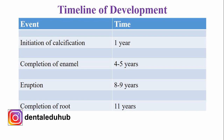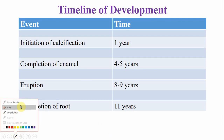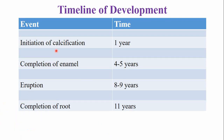The maxillary lateral incisor — initiation of calcification or crown formation — begins around the age of one year. The completion of the enamel or crown formation is completed by the age of four to five years, and the tooth emerges into the oral cavity when the child is eight to nine years old.